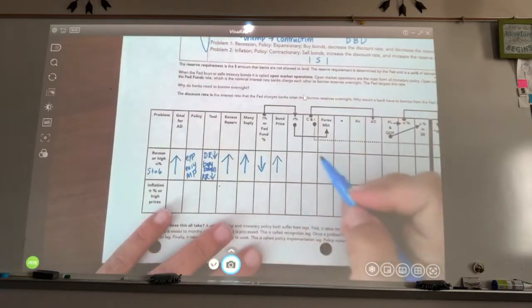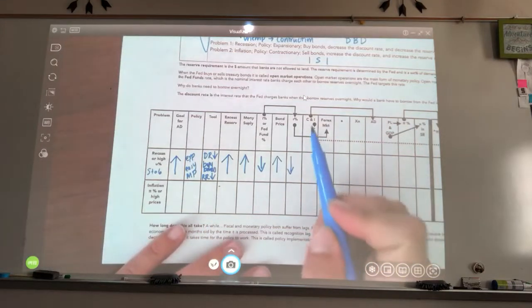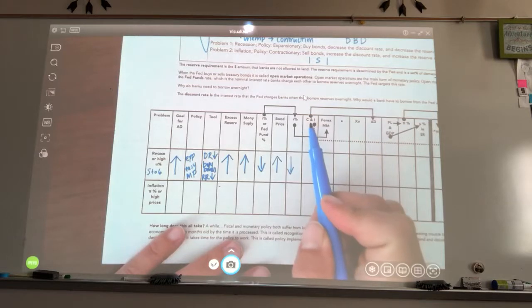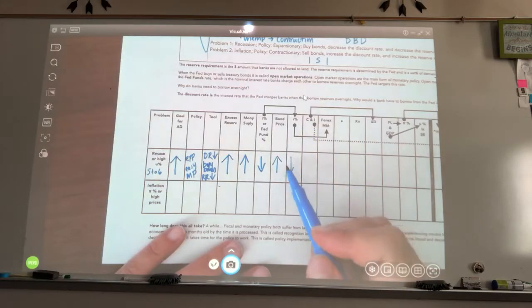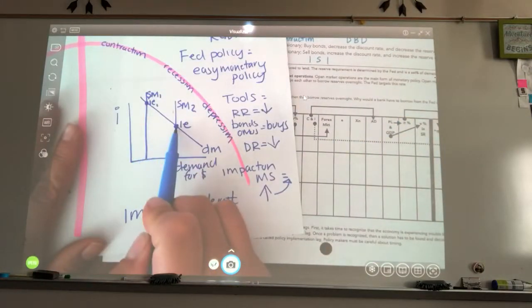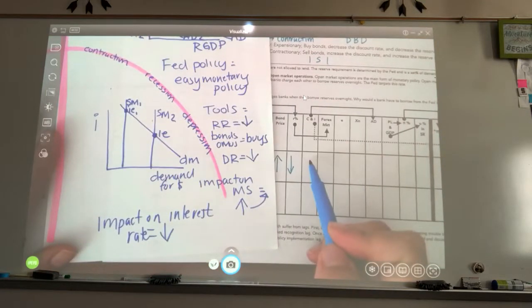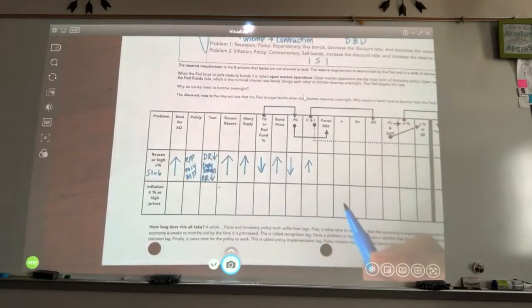So what we're going to see is the real interest rate is going to go down. Do you all remember what C plus I plus G plus XN? Do you all remember what C is? Consumers. What is I? Investment. So if I've now made, which we just talked about, the money supply has increased and now the interest rate has gone down, right? What is going to happen to the consumption of the consumer and the investment of business? It's going to go up.